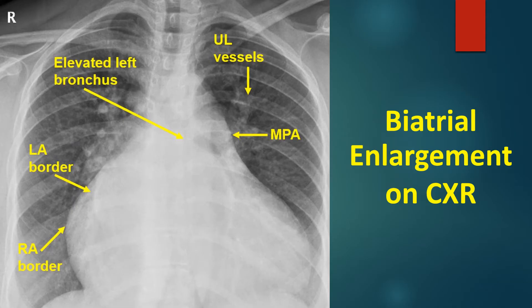The surgical procedure is seldom done now because balloon mitral valvotomy is the procedure of choice for symptomatic mitral stenosis. Summarising the findings, there is evidence of biatrial enlargement, pulmonary venous and arterial hypertension, and right ventricular hypertrophy. Together, these findings can occur in severe mitral stenosis.